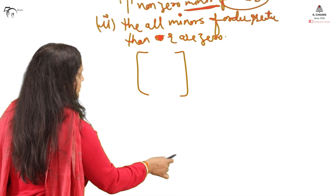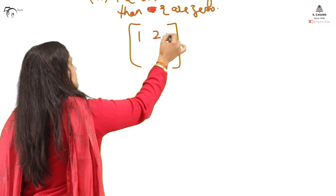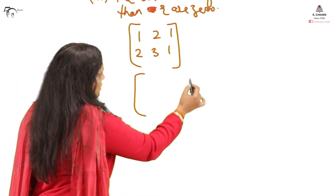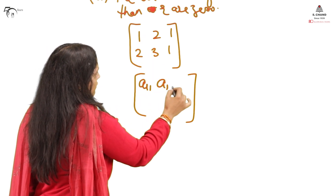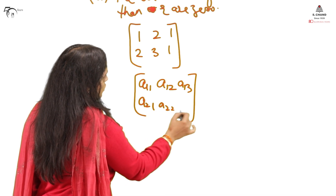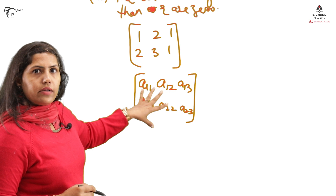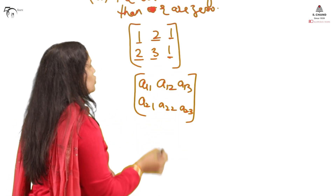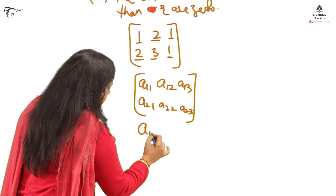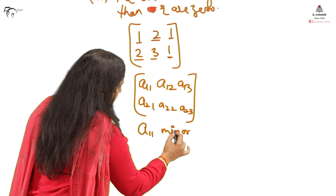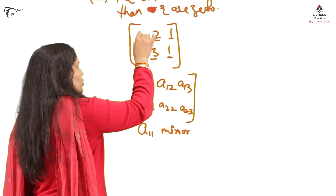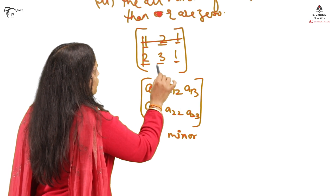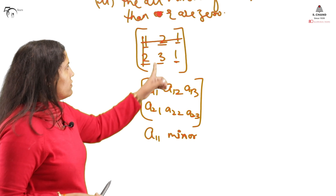First I will start with minor. Suppose this is my matrix, written in symbolic form: a11, a12, a13, a21, a22, a23. What do we mean by minor? The a11 minor means you remove the first row and first column, and what you are left with are the remaining elements. Now you can see two elements are left, forming a 2x2 sub-matrix, and that is the minor.